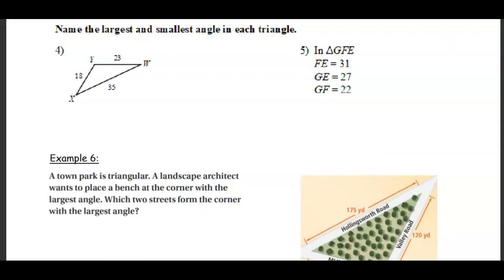Now we're going to go the other way — name the largest and smallest angle in each triangle. To find the largest angle, we find the largest side. With sides 18, 23, and 35, the largest side is 35, which means angle Y is the largest. The smallest side is 18, and across from that, angle W is the smallest angle.